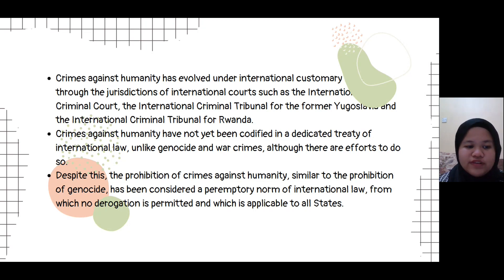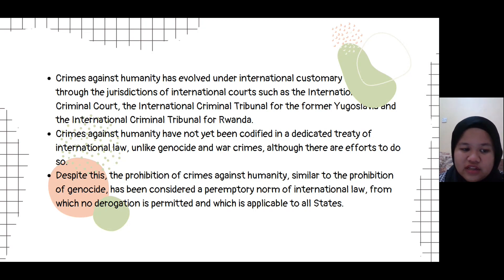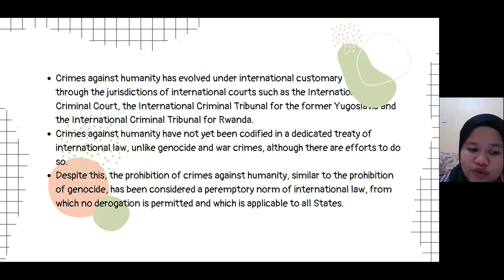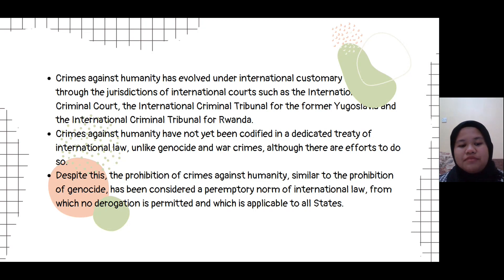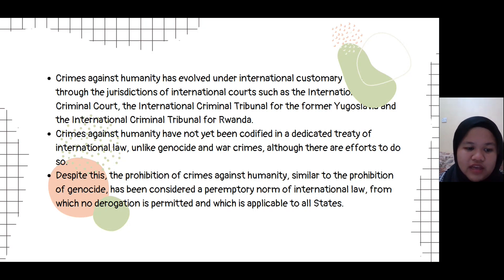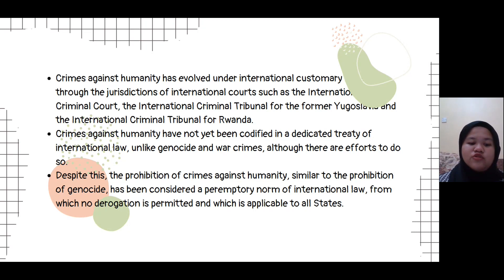The Rome Statute also offers the most extensive list of specific acts that may constitute the crime. Unlike other human rights violations, war crimes do not engage state responsibility but individual criminal responsibility. This means that individuals can be tried and found personally responsible for these crimes. Prohibited acts include murder, extermination, enslavement, deportation or forcible transfer of population, imprisonment, torture, sexual violence, persecution against an identifiable group, forced disappearance of persons, the crime of apartheid, and other inhuman acts of a similar character intentionally causing great suffering or serious injury to body or mental or physical health, based on Rome Statute Article 7.